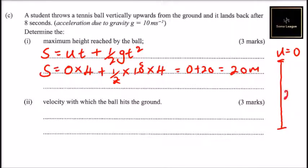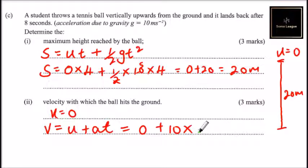The other part is velocity with which the ball hits the ground. When it is coming down u equals zero and we are looking for v, so we can use this formula: v equals u plus at, which equals zero plus our a is 10 and our time of coming down is four seconds. This will give us 40 meters per second. So that is the velocity that it will hit the ground with as it falls down. That is the application of Newton's laws of motion.